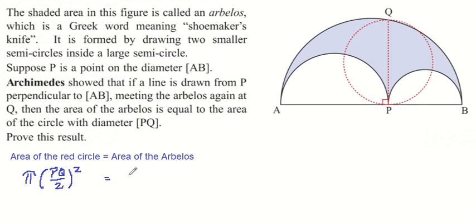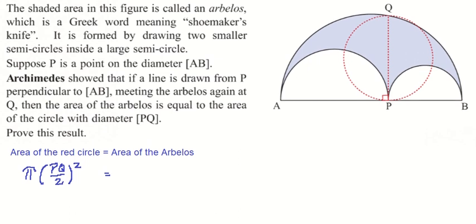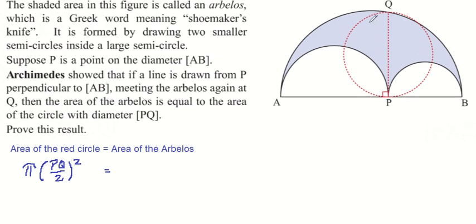And the area of the arbelos is, well, how do we get the area of the arbelos? This involves three semicircles here. So that would be the area of the big semicircle minus the area of the medium semicircle minus the area of the small semicircle.